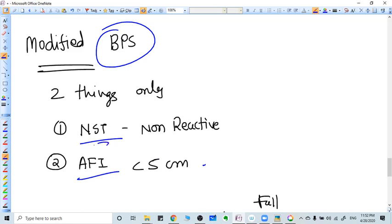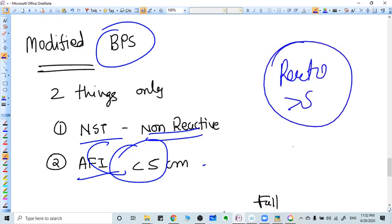The cutoff is five, and the NST should be reactive. If the NST is reactive and AFI is more than five, then everything is okay. But if the NST is non-reactive, or either criteria from both is problematic,